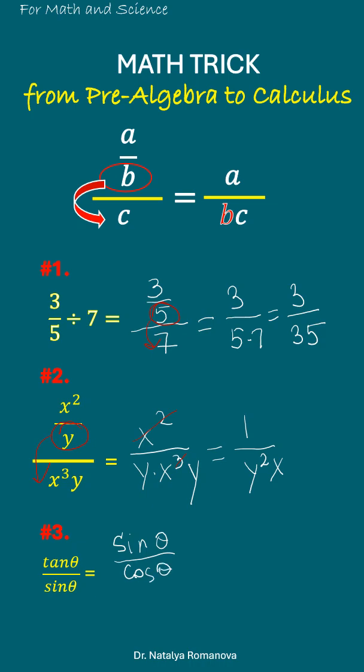Take tangent θ divided by sine θ. Cosine θ goes to the denominator, and we have sine θ divided by cosine θ times sine θ. We can cancel out sine, leaving 1 over cosine θ.